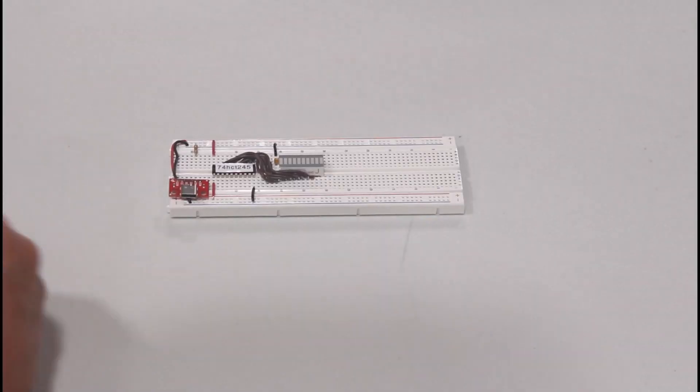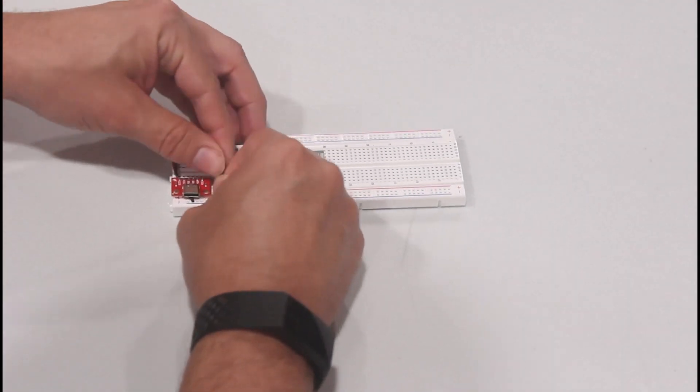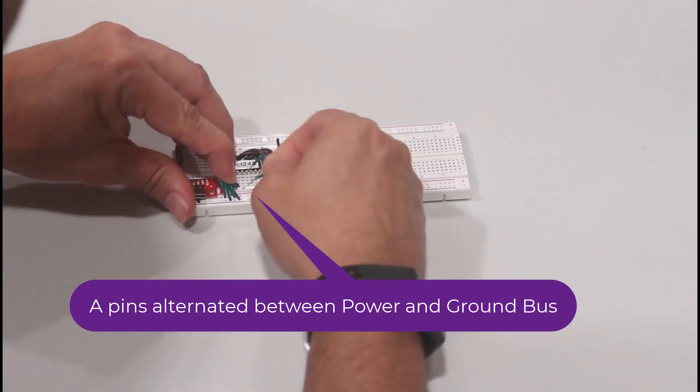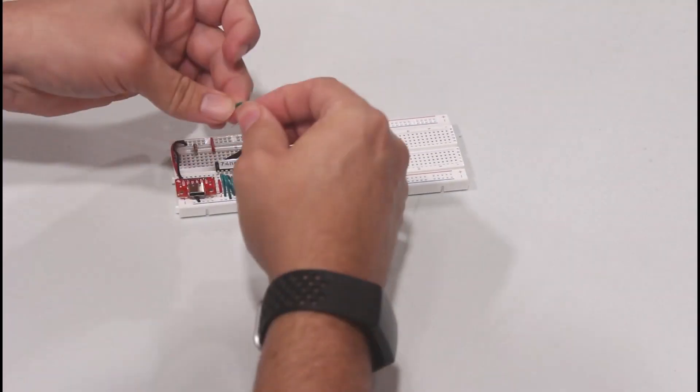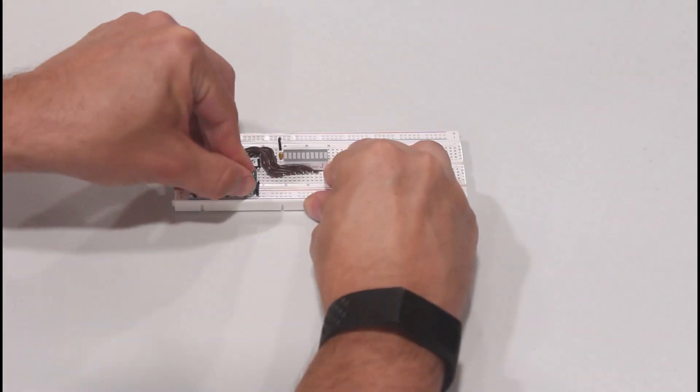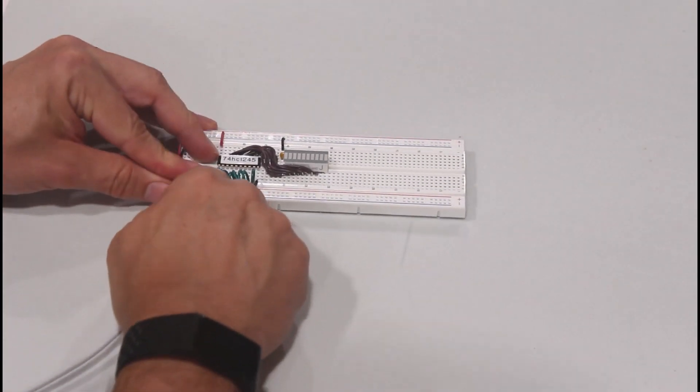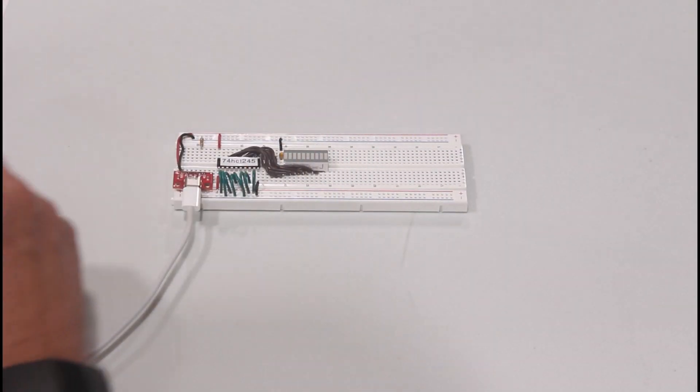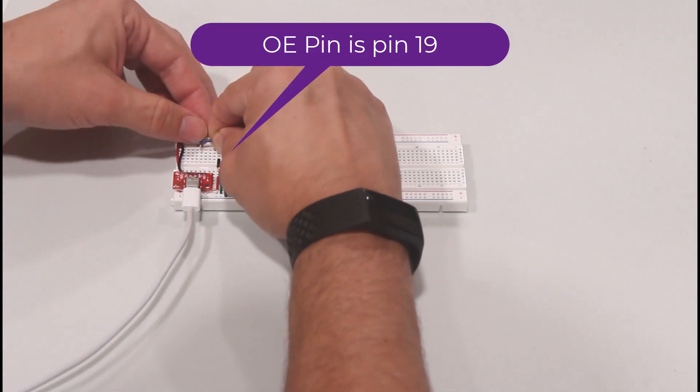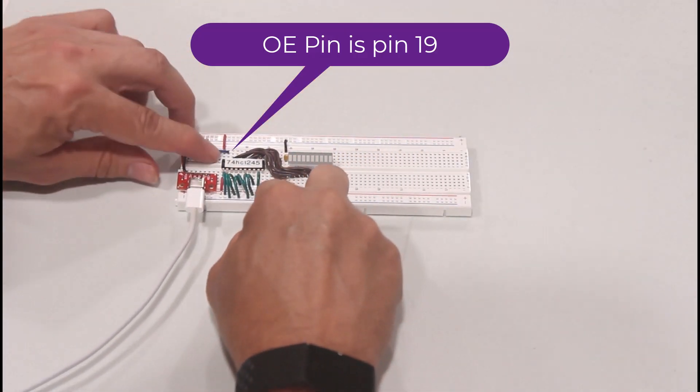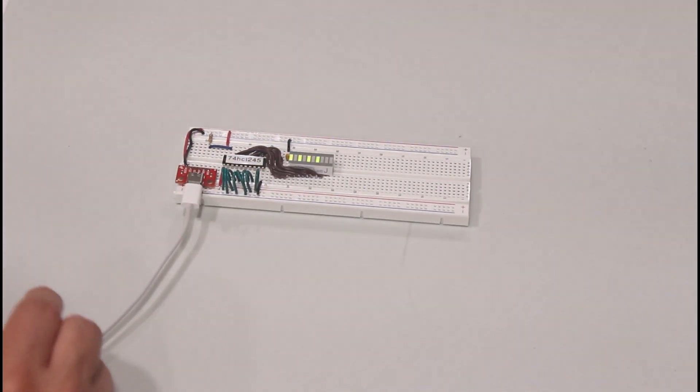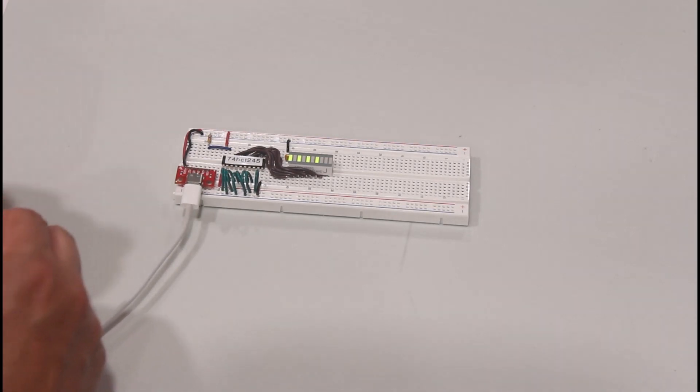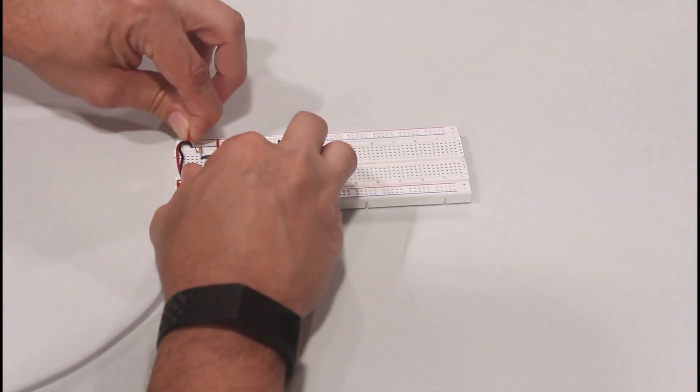We will wire a random input pattern for the A side. Now we bring the ground signal over to the output enabled pin as previously described. Applying power, you can see that the transceiver IC is passing the signal from the A side as input to the B side as output.